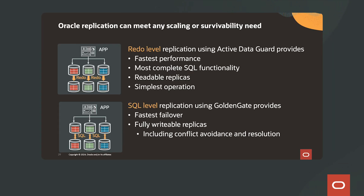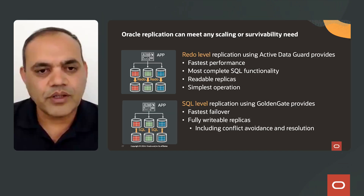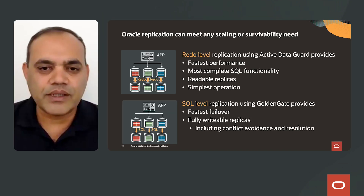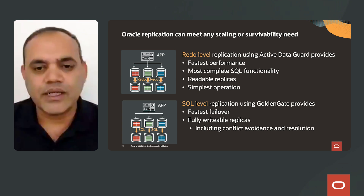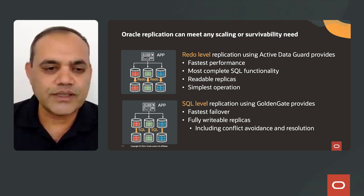Oracle replication can meet any scaling or survivability needs. It supports redo-level replication using Active Data Guard, which provides the fastest performance, most comprehensive SQL functionality, readable replicas, and simplest operation. It also supports SQL-level replication using GoldenGate, which provides the fastest failover, fully writable replicas, including conflict avoidance and resolution.